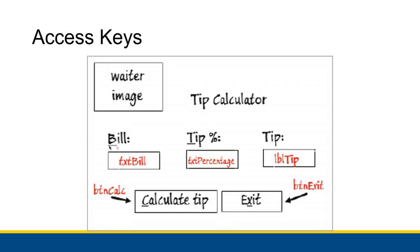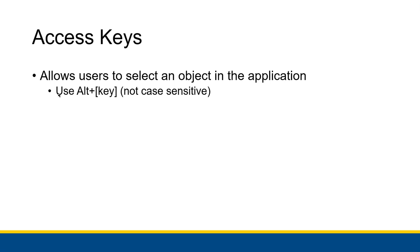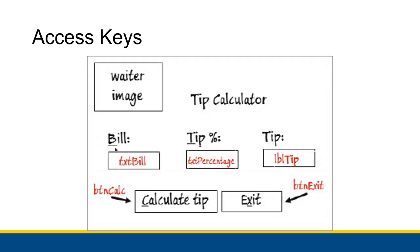The letters being one of these underlined letters. In this particular application, if I pressed ALT and B, that would be the access key associated with bill. If I pressed ALT and X, that's the access key associated with exit. You would press ALT and the letter associated with that particular control, and if that letter is an access key, it will automatically be underlined. You don't have to underline it yourself — it will automatically get underlined for you by Visual Basic.